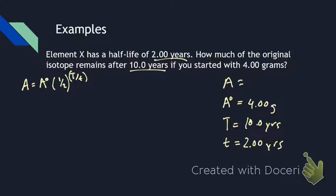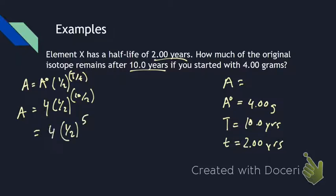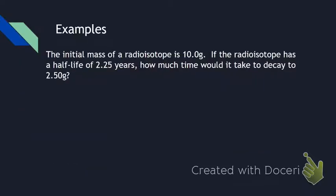We're solving for A, so we just plug it in: A equals 4 times one-half to the power of 10 over 2. You solve the exponent first, so this is one-half to the fifth, times 4. If you do that, you get 0.125 grams. We know it's grams because we initially started with grams.